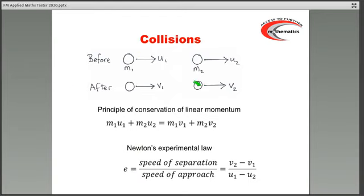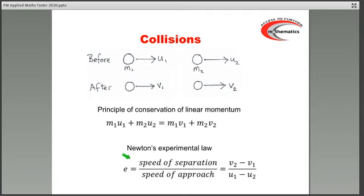The second equation comes from Newton's experimental law. E, the coefficient of restitution, is the speed of separation divided by the speed of approach. Before the collision, the first particle is moving faster than the second one and catching up — approaching it. After the collision, the one at the front will be going faster, so the speed of separation will be V2 minus V1. So the top of the fraction is the speed of separation, V2 minus V1; the bottom is the speed of approach, U1 minus U2. Notice the 1s and 2s are a different way around on the top than on the bottom. This gives us two equations, and then some GCSE algebra will enable us to solve.